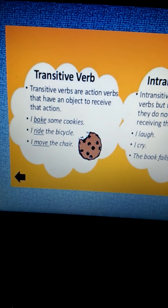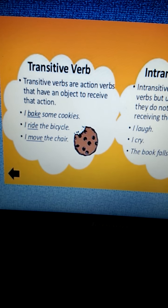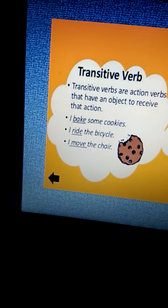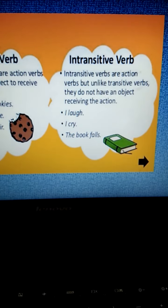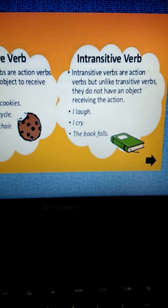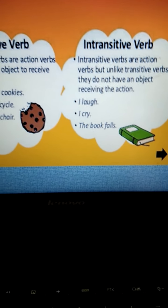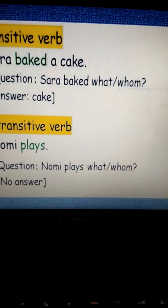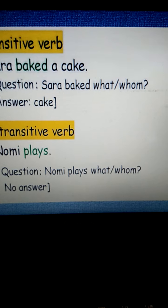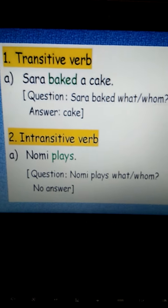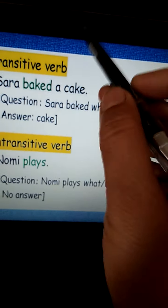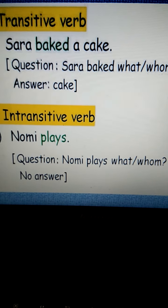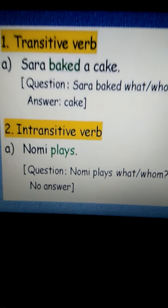What is a transitive verb? A transitive verb is one in which we have an object to receive the action. For example, 'I bake some cookies.' What do I bake? I bake some cookies. In an intransitive verb, there is no object to receive the action — they are complete in meaning themselves. For example: 'I laugh,' 'I cry,' 'the book falls.' Transitive verb: 'Sarah baked a cake' — Sarah baked what? A cake. When we can answer such a question, that is a transitive verb. 'Nomi plays' — Nomi plays with what or with whom? We have no answer, so that is an intransitive verb.